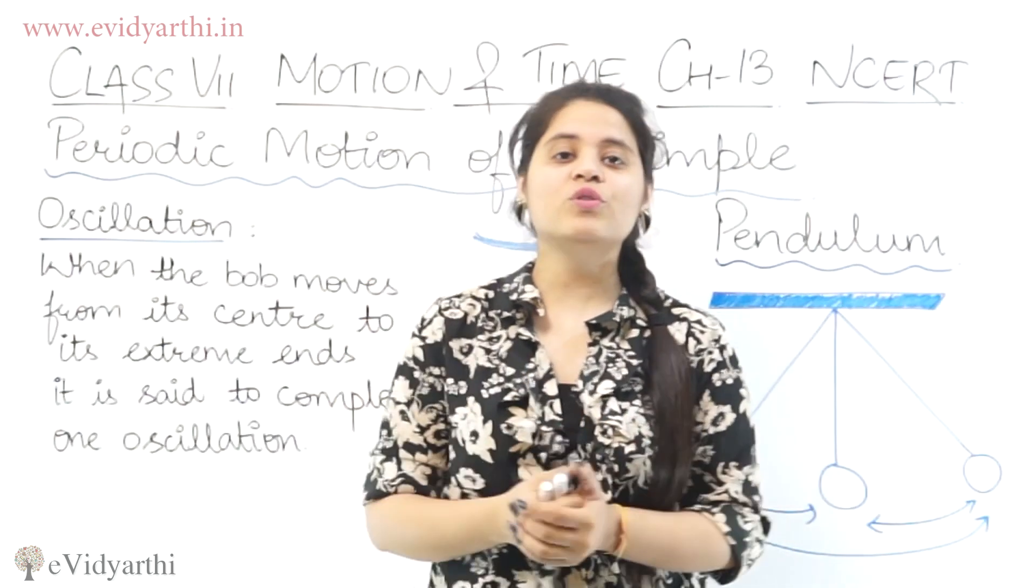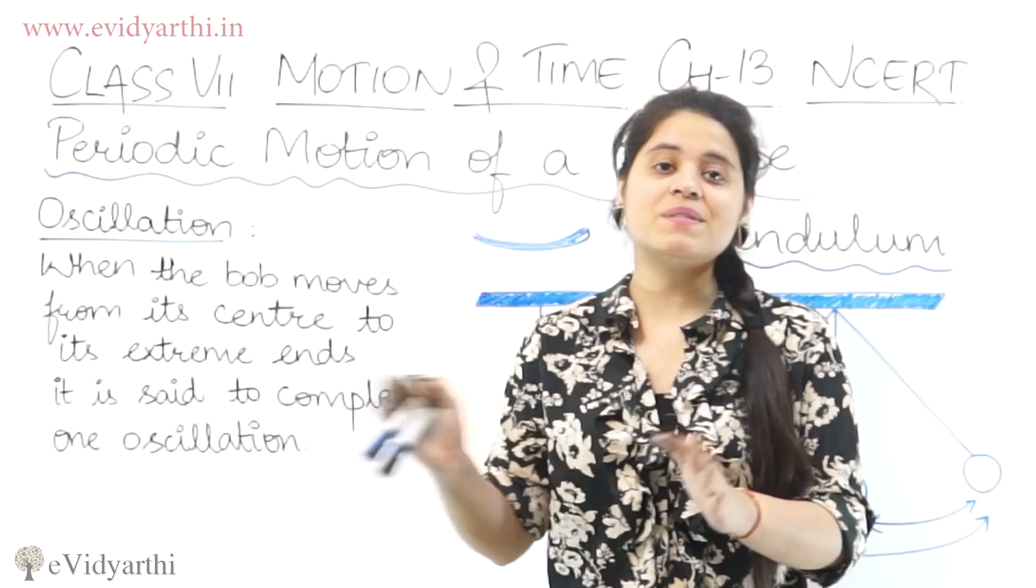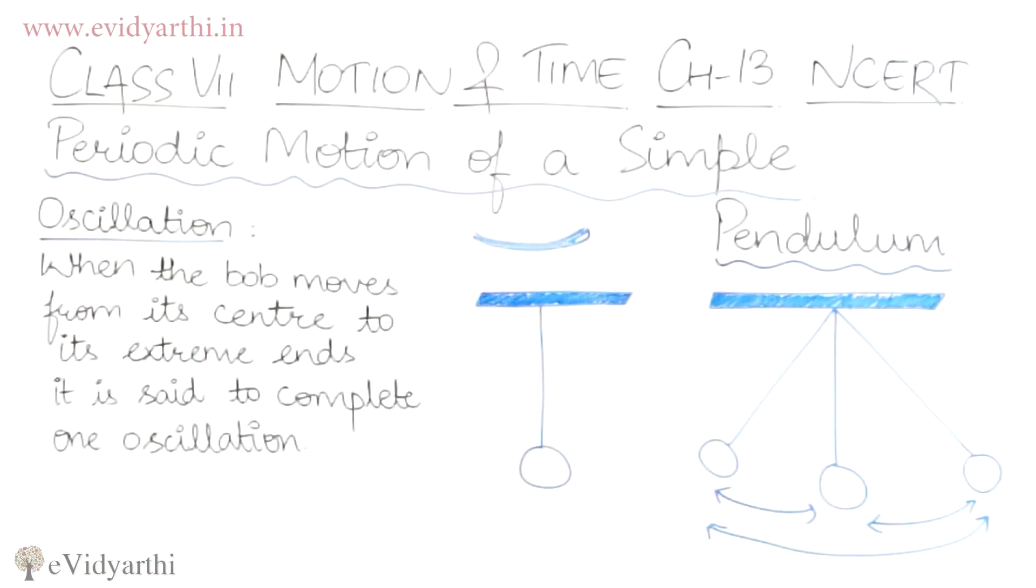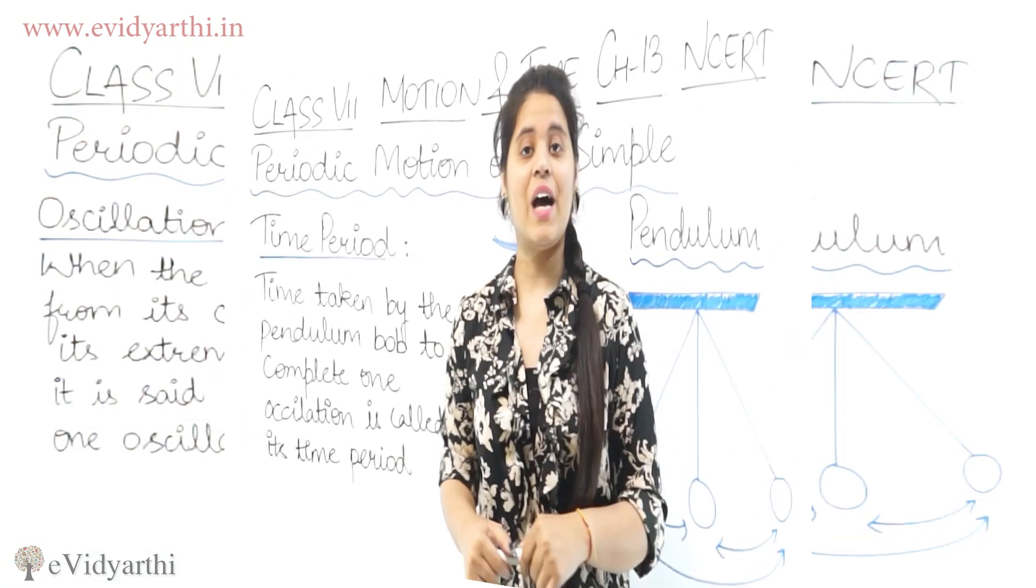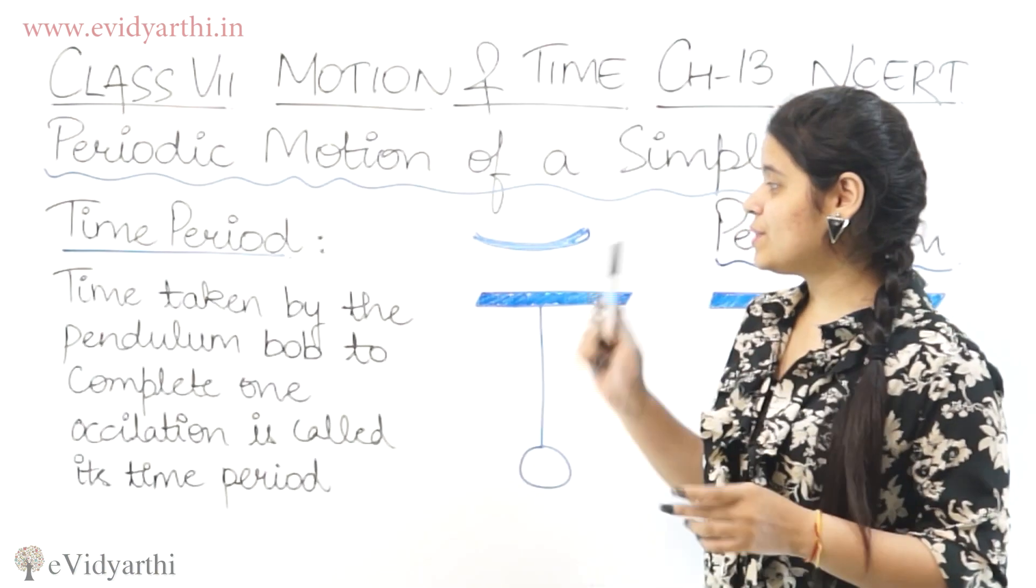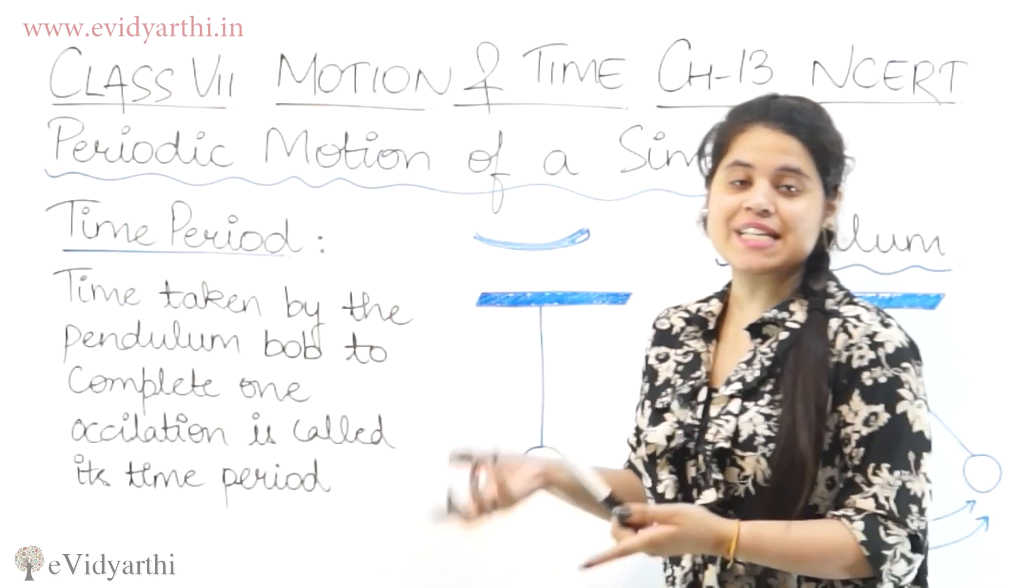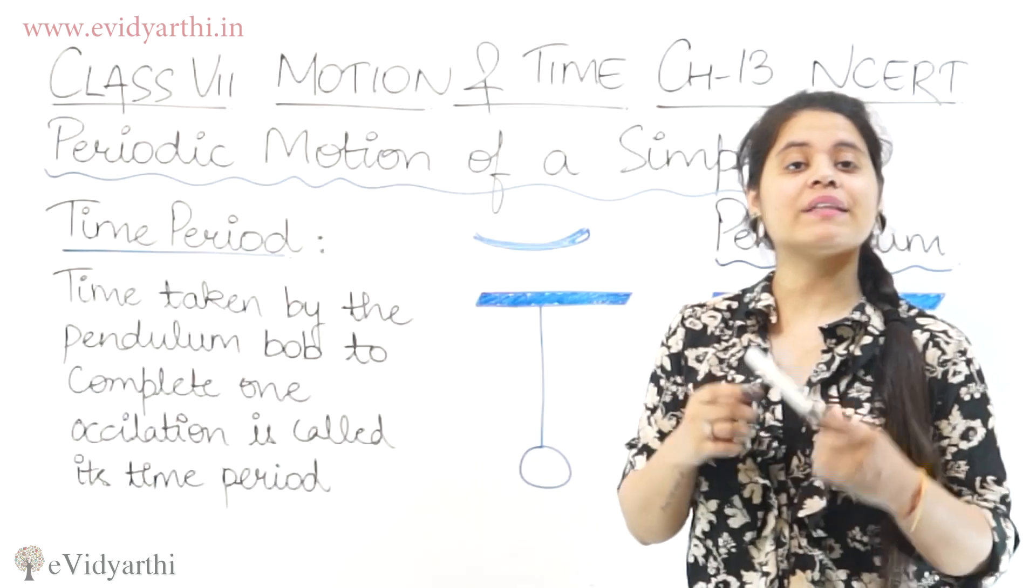So now we'll move to the last thing related to pendulum, that is the time period. So now we have time period. Time taken by the pendulum bob to complete one oscillation is called time period.